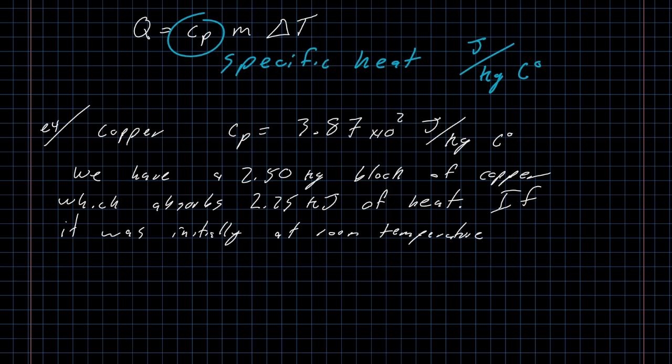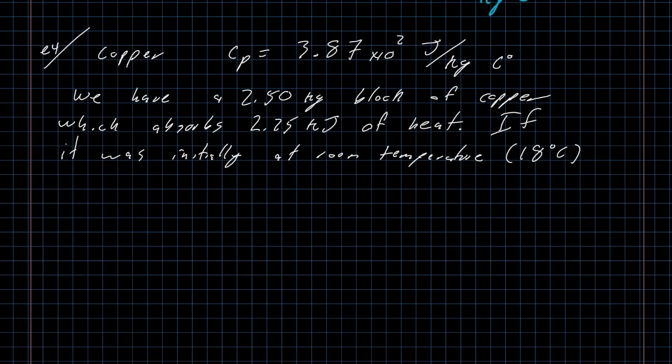If the copper was initially at room temperature and I'm going to define here room temperature as 18 degrees celsius. I do want to stress here that there is no one value for room temperature. 18 degrees celsius and 20 degrees celsius are both very common values. 300 kelvin is a common value and 72 fahrenheit is a common value. But just saying room temperature isn't enough, we have to name the room temperature. So if it was initially at 18 degrees celsius, what is its temperature now?